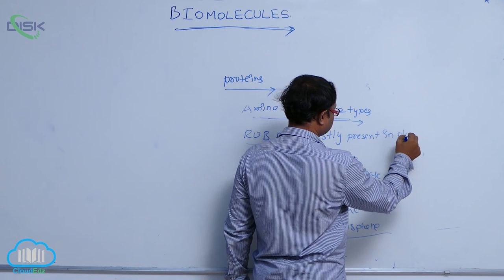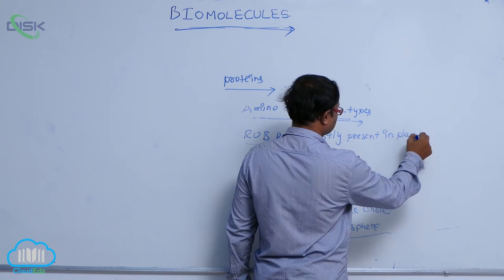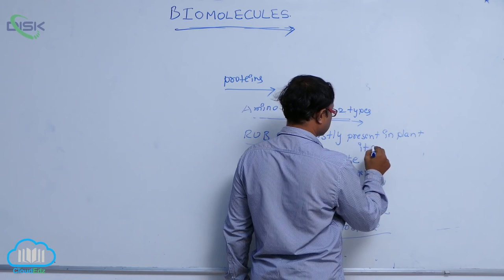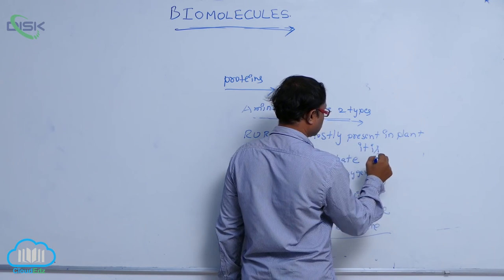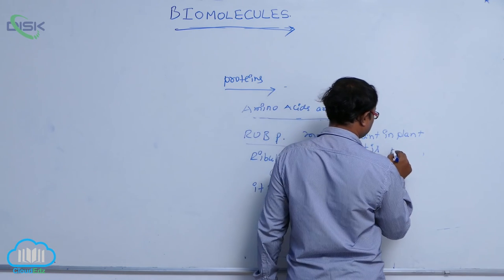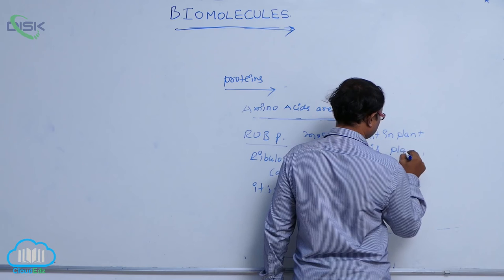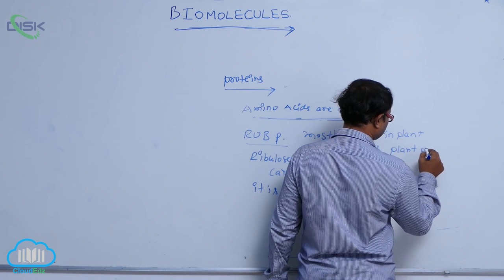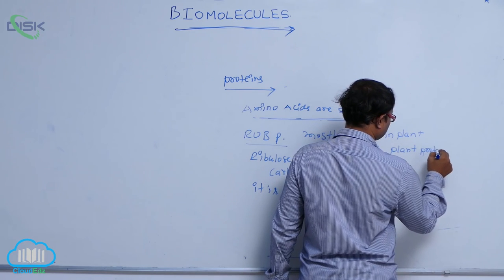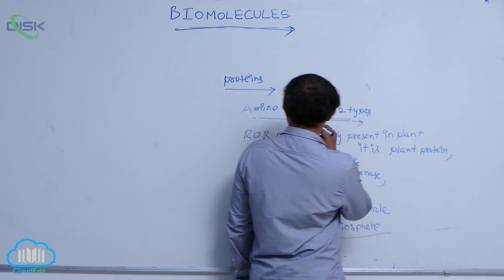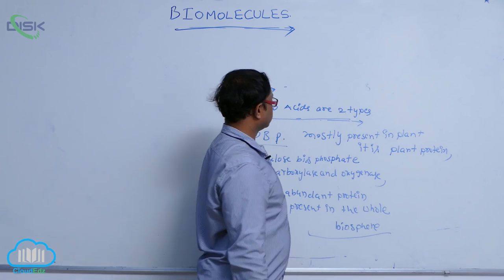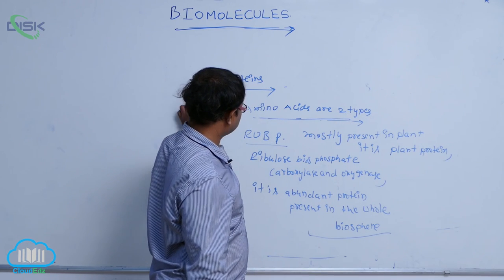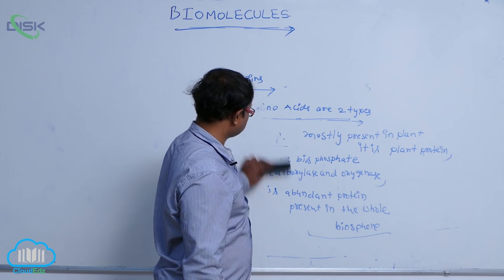In plants, RuBP is a plant protein. So these are some of the important amino acids and their functions.